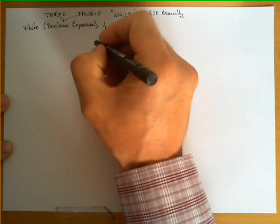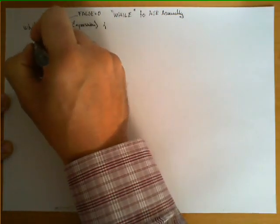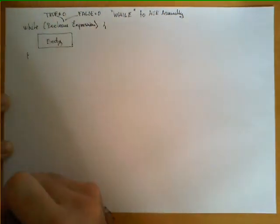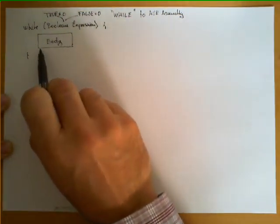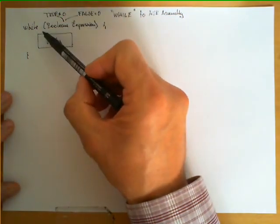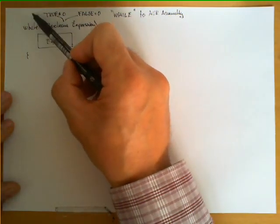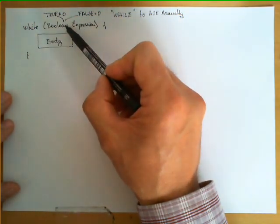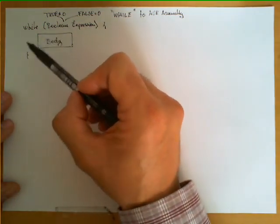After the boolean expression in parentheses, we include with curly braces what we typically know as the body of the loop. The curly brace surrounds a chunk of code that is going to be executed repeatedly until the boolean expression is no longer true. The program will first evaluate the boolean expression, and if it is true it will execute the body and go back to evaluate the expression.